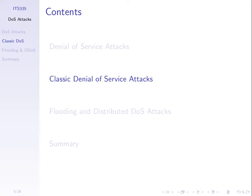The first two examples are what we sometimes call classic denial of service attacks — some of the original ones that were developed, and there are now ways to defend against them. They're the original ones, but the concepts of these classic attacks have been extended to become realistic attacks today. We'll go through just two classic attacks.